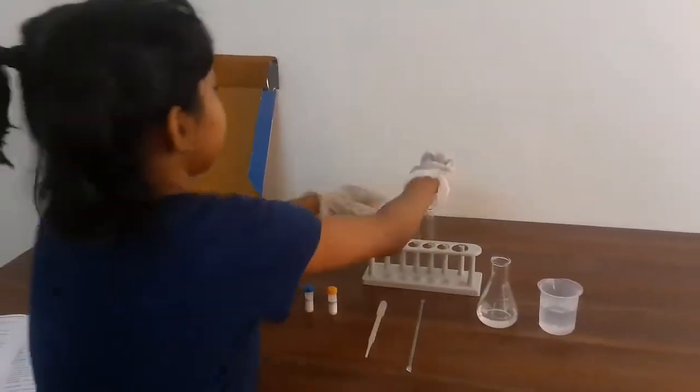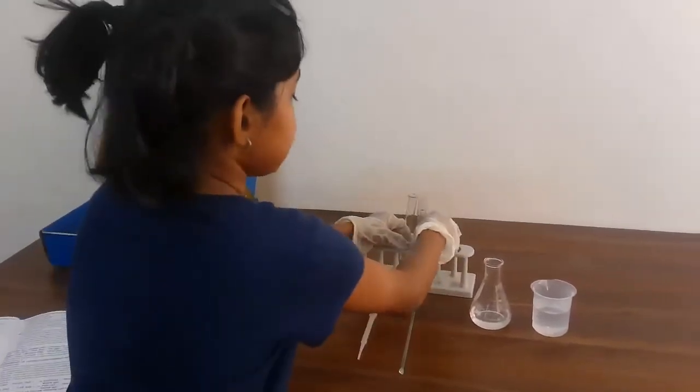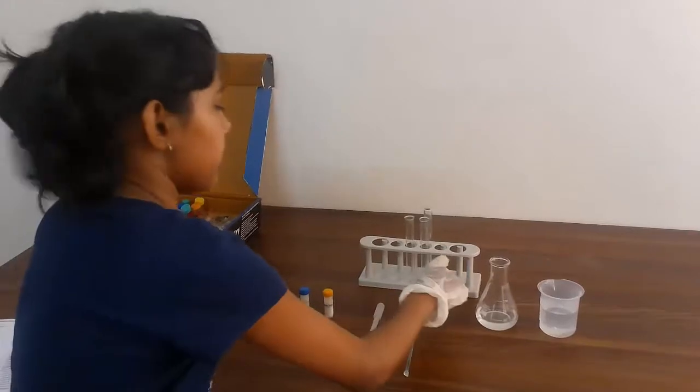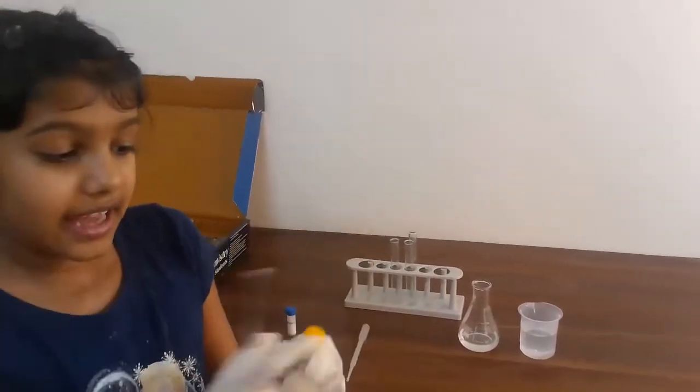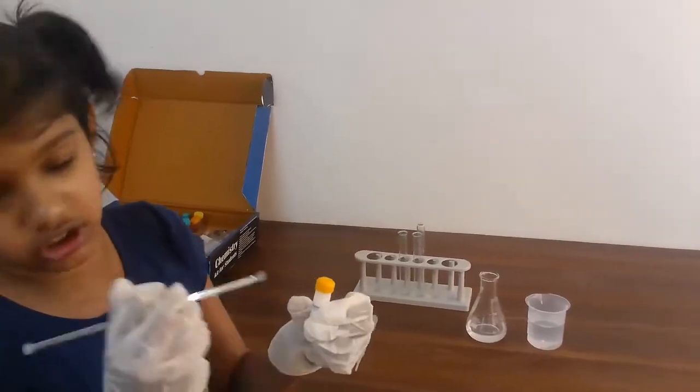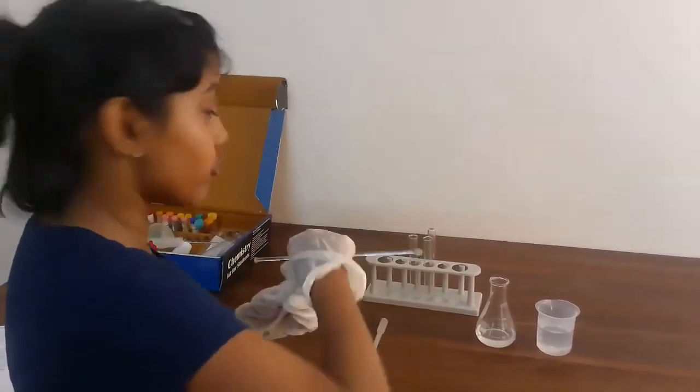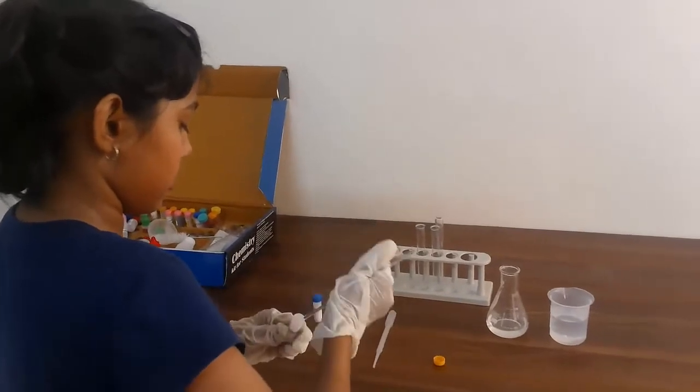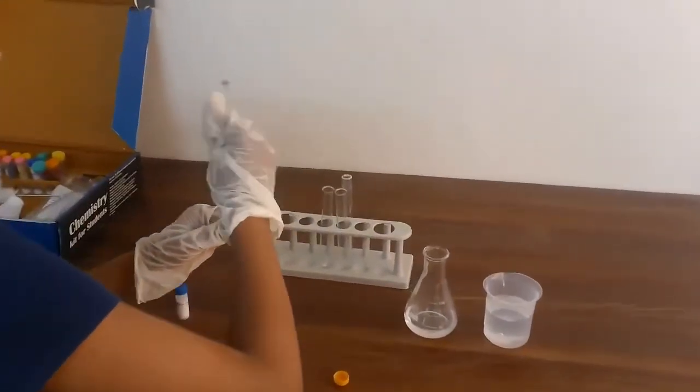So the first step will be to put two test tubes inside the object you're going to be keeping the test tubes in. Then take your spatula and take three spatulas of calcium chloride and keep it inside one test tube. Make sure you remember which test tube you're keeping it inside of.